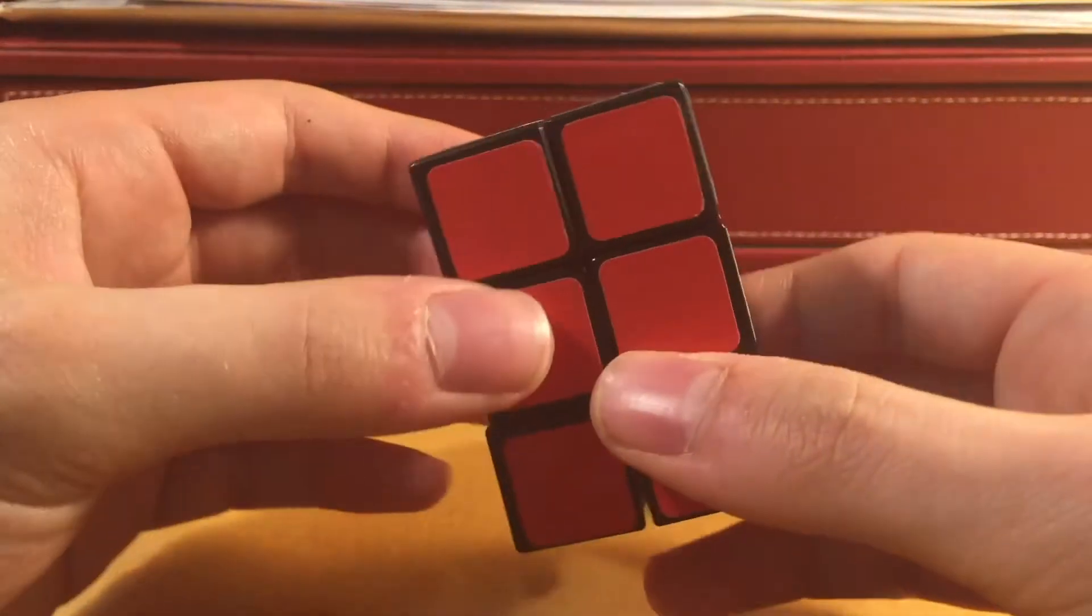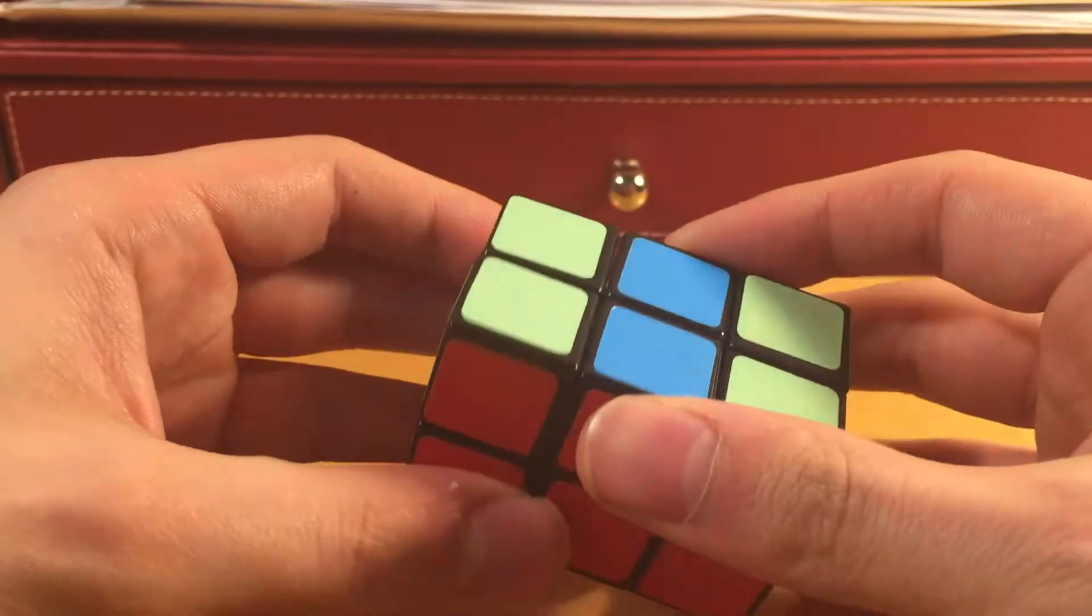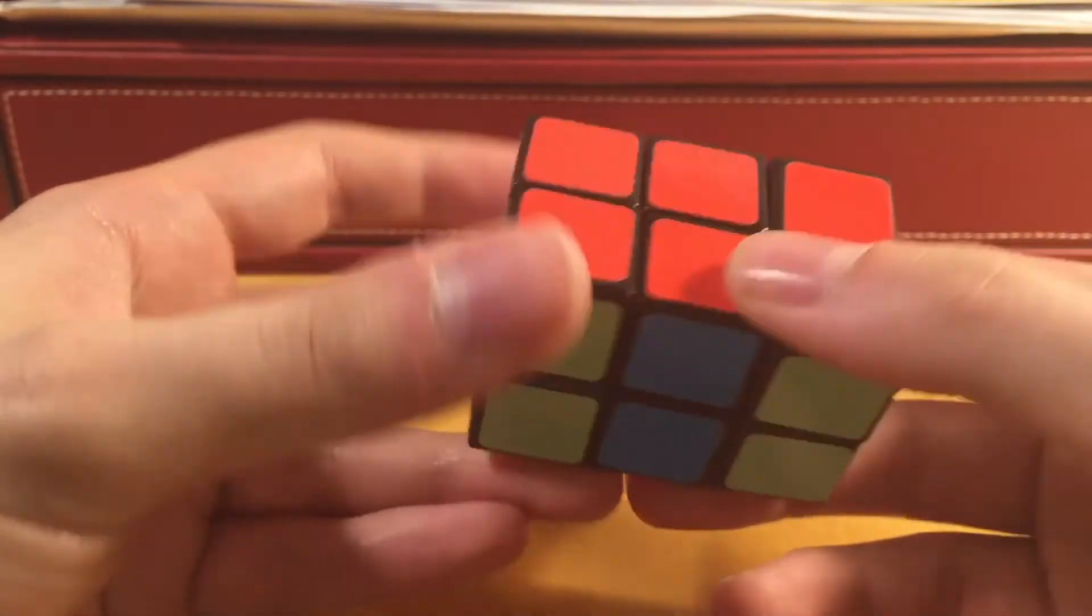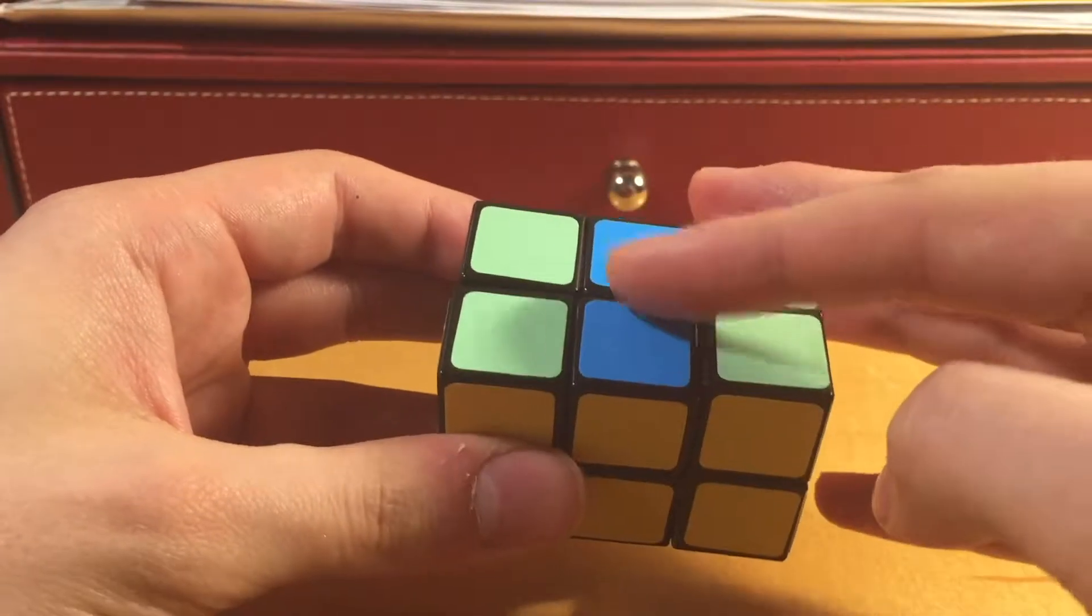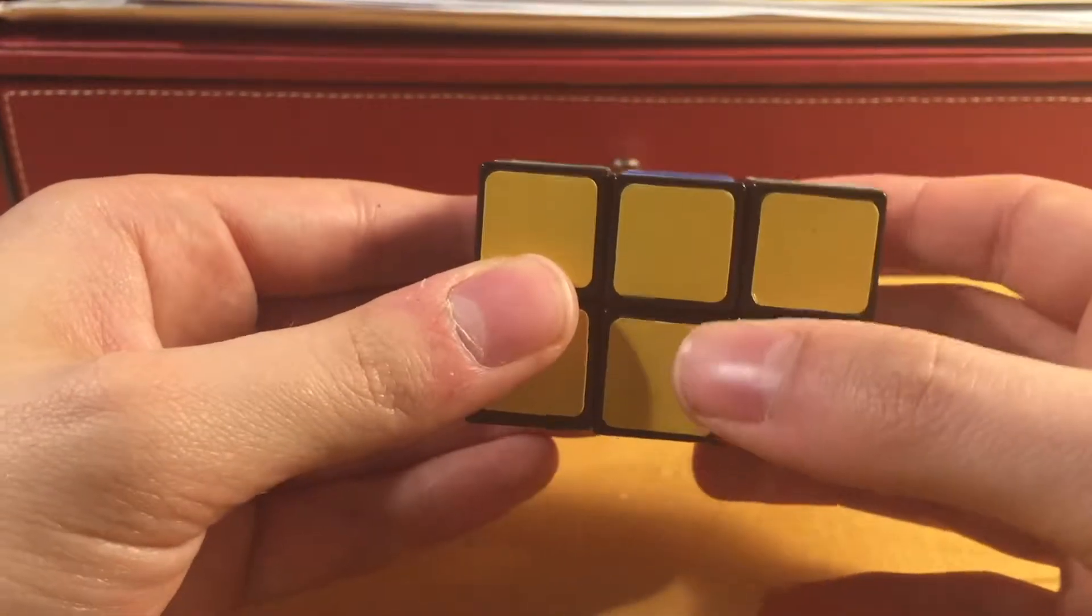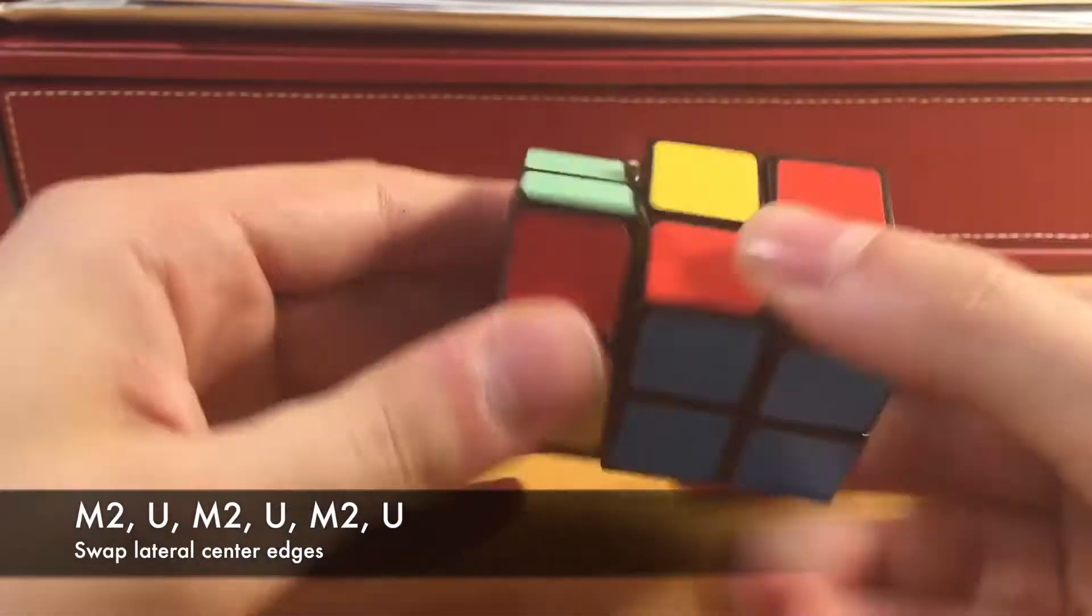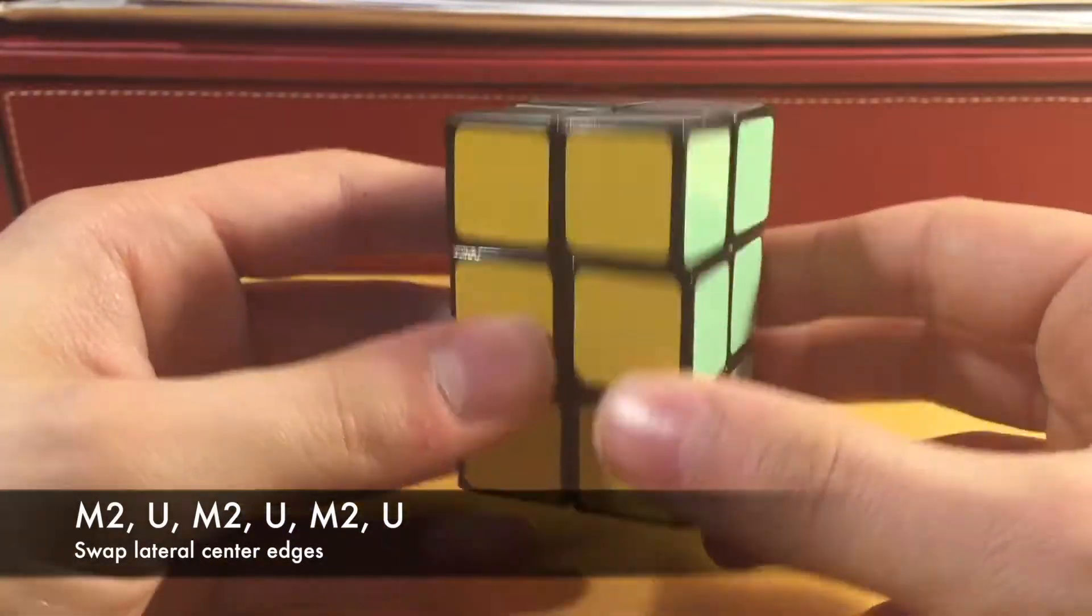The last and final case that you could potentially run into is a case that looks like this. So, if you have this following case, again, you're going to want to hold the puzzle horizontally. And you're going to want to do so with this incorrect bar on the top and bottom. And from here, referring to this as an M slice, you're going to want to do M2, U, M2, U, M2. And that solves the cuboid.